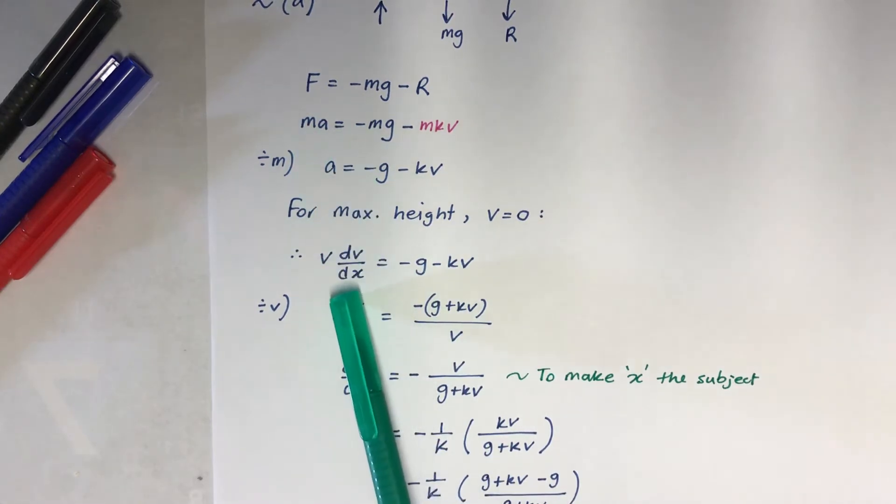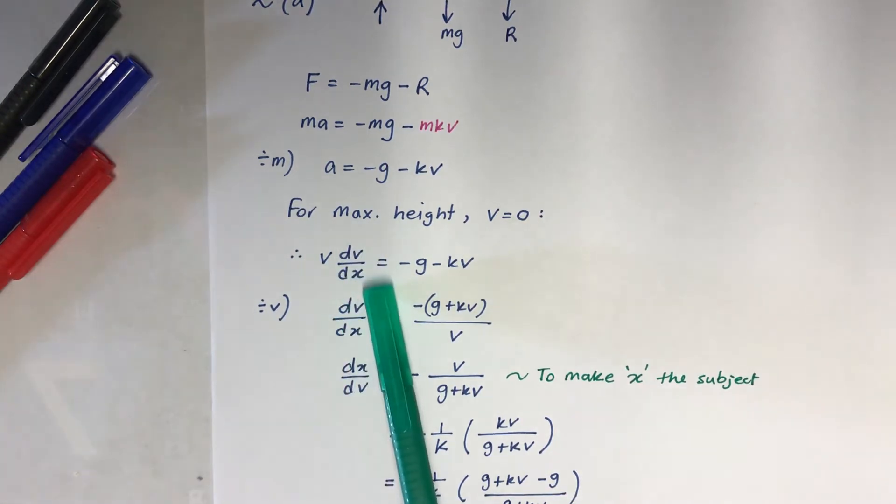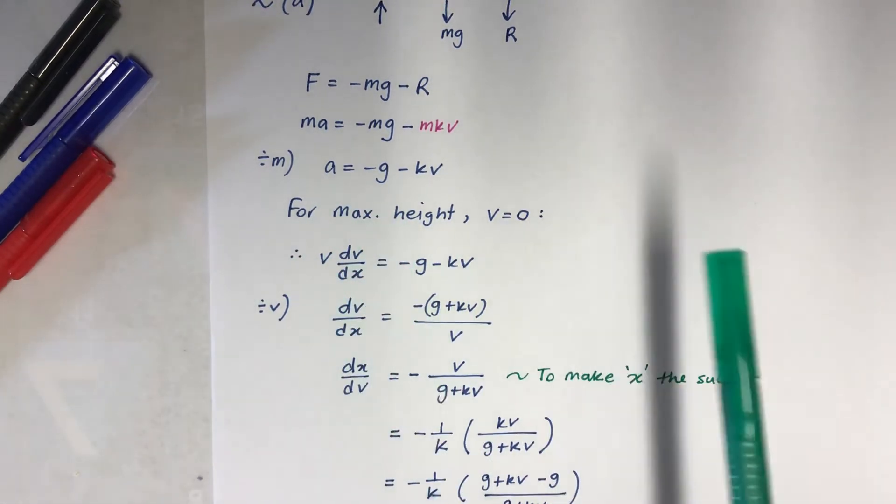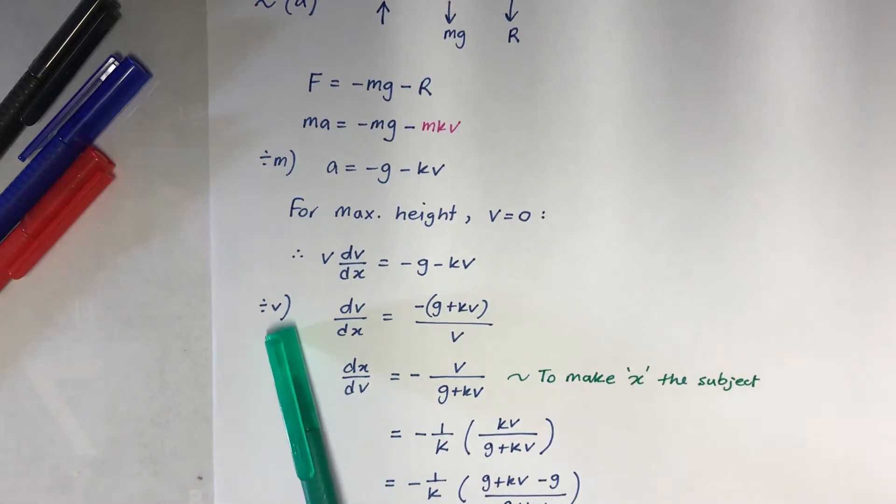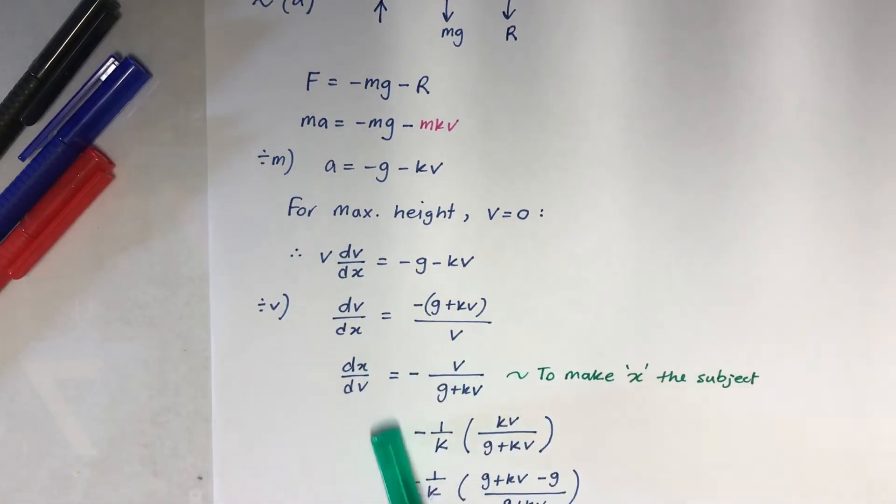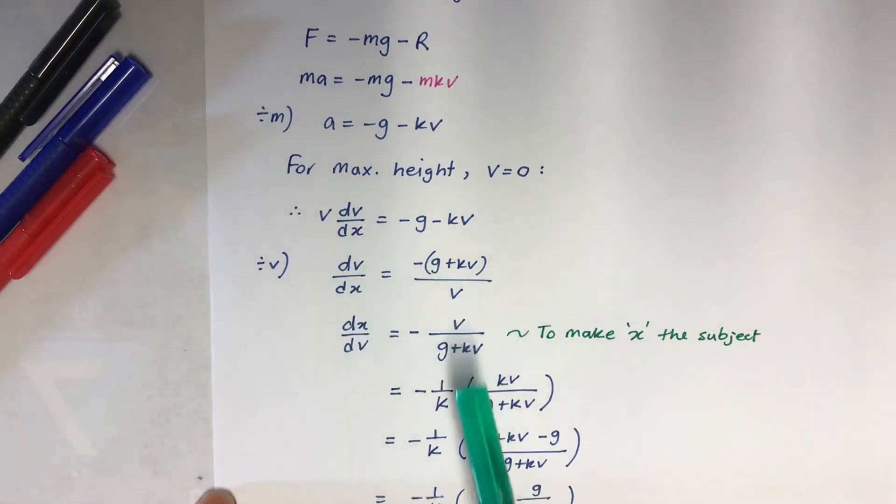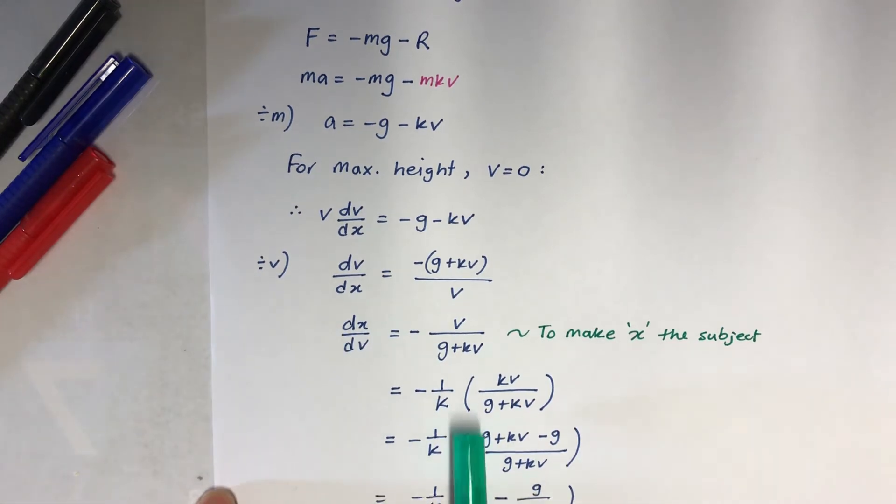And then for maximum height, V equals 0, so I want to change that A into something to do with X in it. So we can use V dV/dX, not dV/dT. Mostly if you expect it, the X will be this one. If you expect it T, it will be dV/dT. So I divided by V onto here. Now we have to make X the subject, which means integration. So you want to make a perfect condition for integration that we have to do. So I'm going to make dX/dV, so I flipped. Why? Because I want to make X the subject.